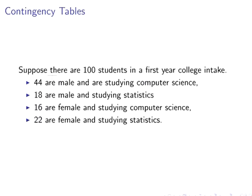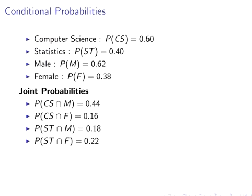So let's consider an example. Suppose there are 100 students in a first year college intake, 44 are male studying computer science, 18 are male studying statistics, 16 are female studying computer science, and 22 are female studying statistics. So we might tabulate all that information or present all that information with the following summaries, the probabilities.